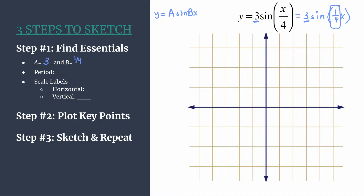b also helps us find the period. To find the period we take 2π and divide by b, so we have 2π divided by 1/4. That's the same as multiplying by the reciprocal, so multiplying by 4 — our period is 8π. That's the length needed to complete one cycle horizontally. If only a quarter of a cycle happens between 0 and 2π, it makes sense that a full cycle takes 8π.